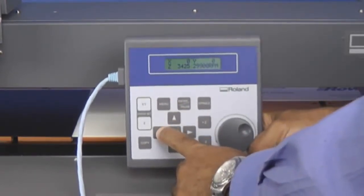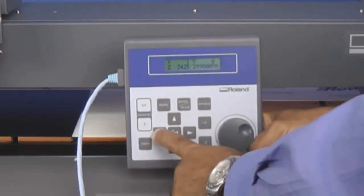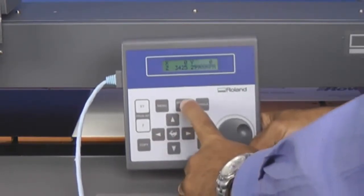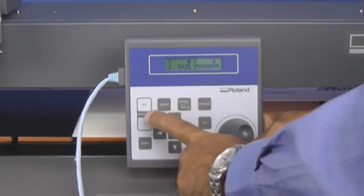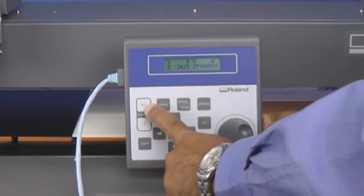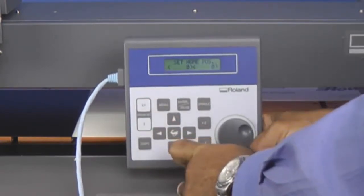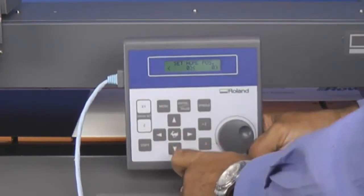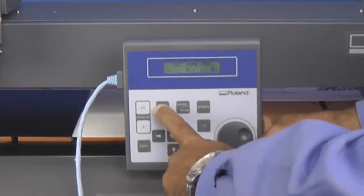You want to make sure that the nose cone is over the lower left corner of our material. Using the arrow keys, you can move the carriage into position so the tool is over that lower left corner.